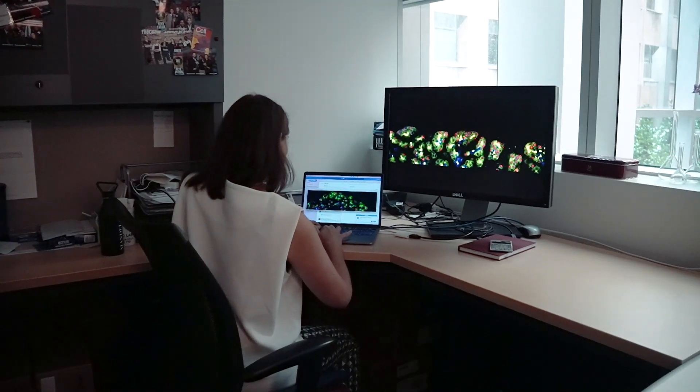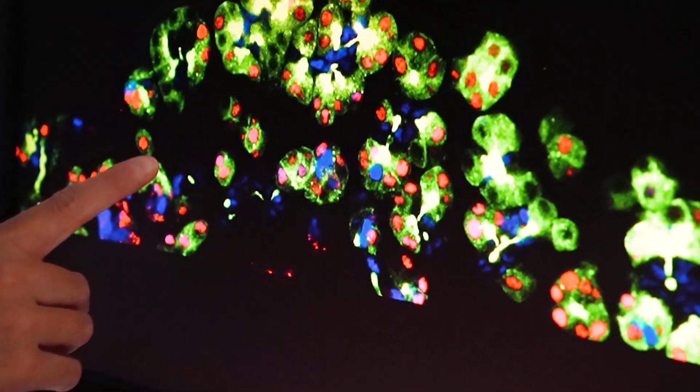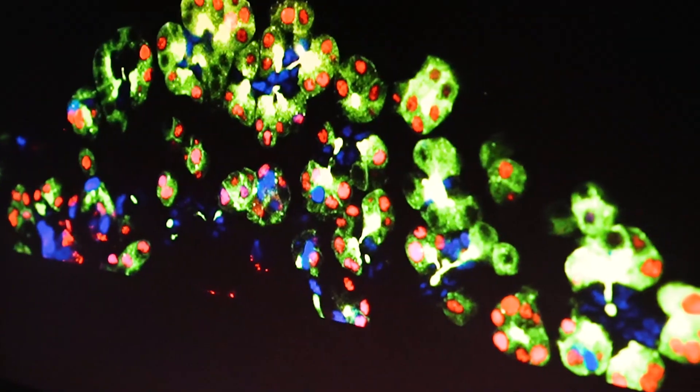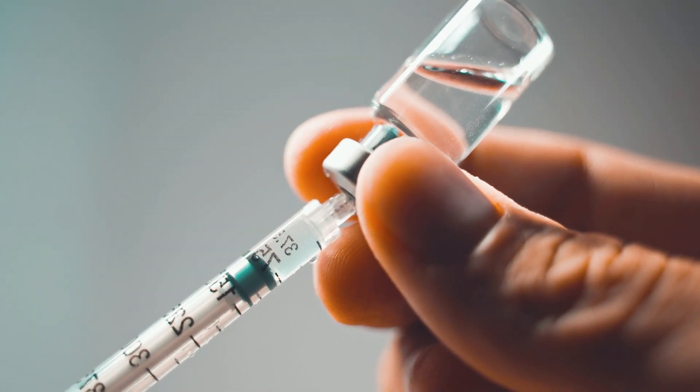The primary function of the beta cells is to make insulin and regulate our blood glucose and without them the individual would be living with type 1 diabetes. People living with type 1 diabetes rely on insulin injection through needles or pumps to substitute for the absence of these cells.